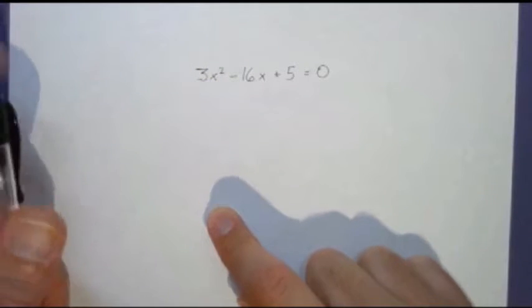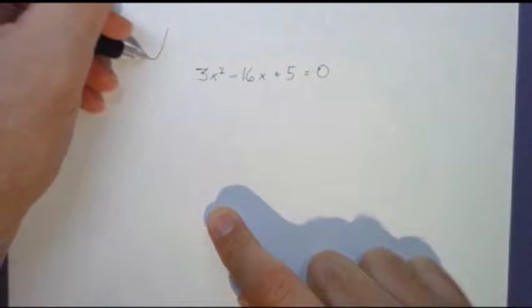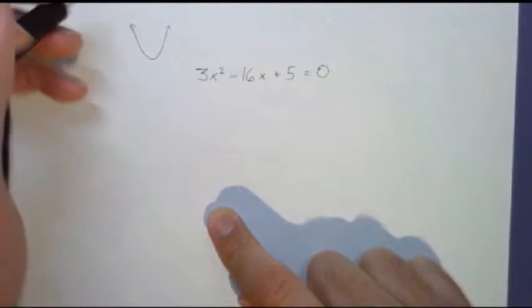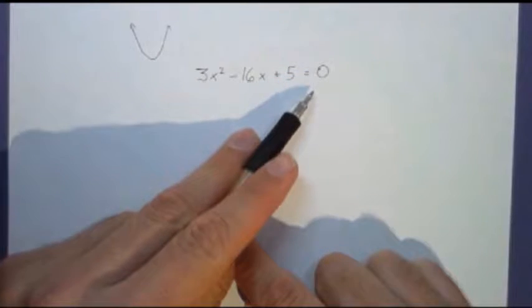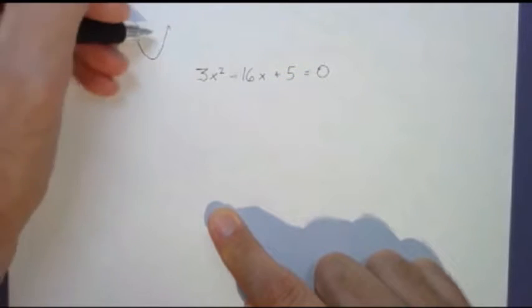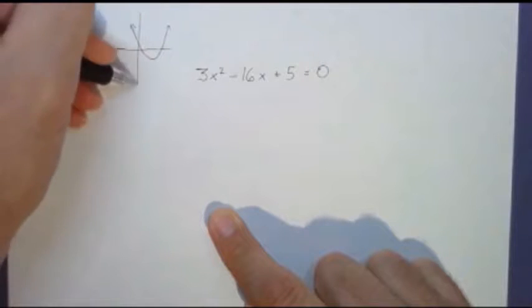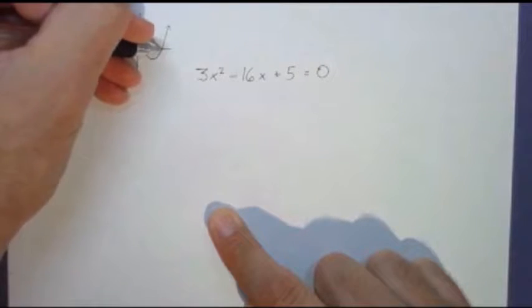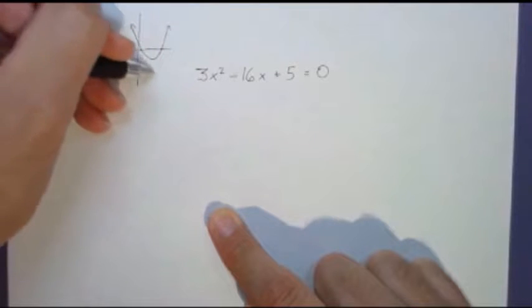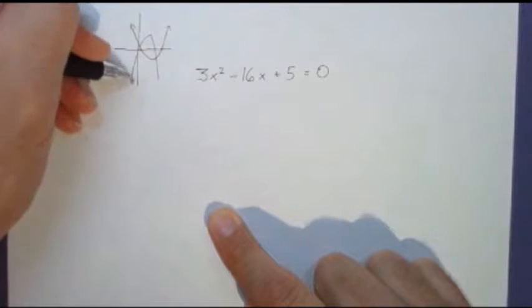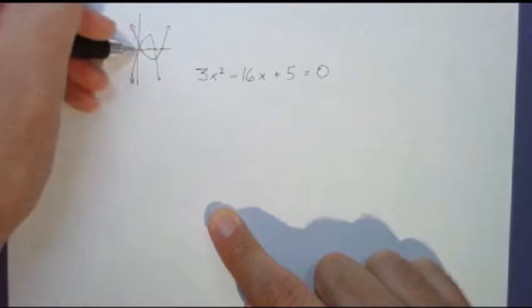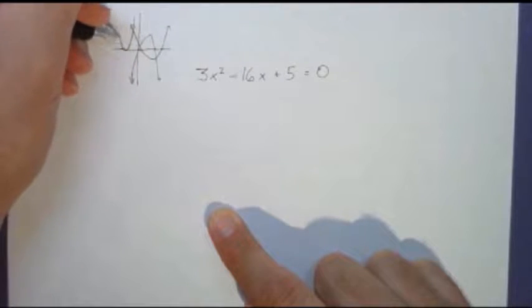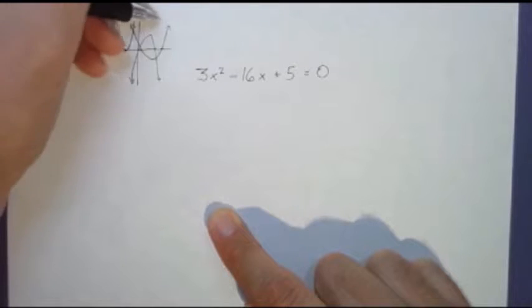Visually, quadratics are parabolas. When we solve a quadratic, setting it to zero, what we're trying to find are the roots of the quadratic, or the x-intercepts. They can curve up or down. They're absolutely symmetric. We want to see where they cross. They might only cross at a single place, or they could cross not at all.